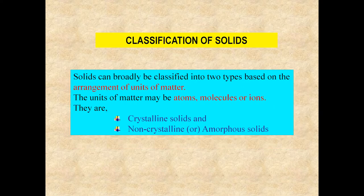Solids are classified into two categories: crystalline solids and non-crystalline solids, also known as amorphous solids. Let us see how to distinguish between these two types.